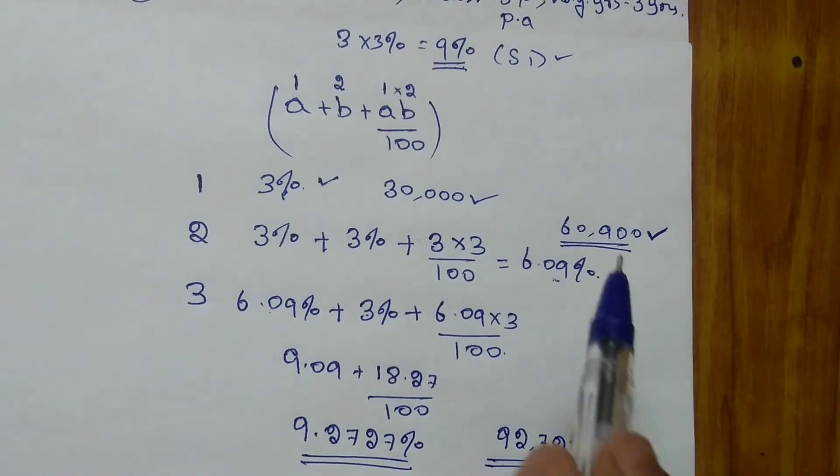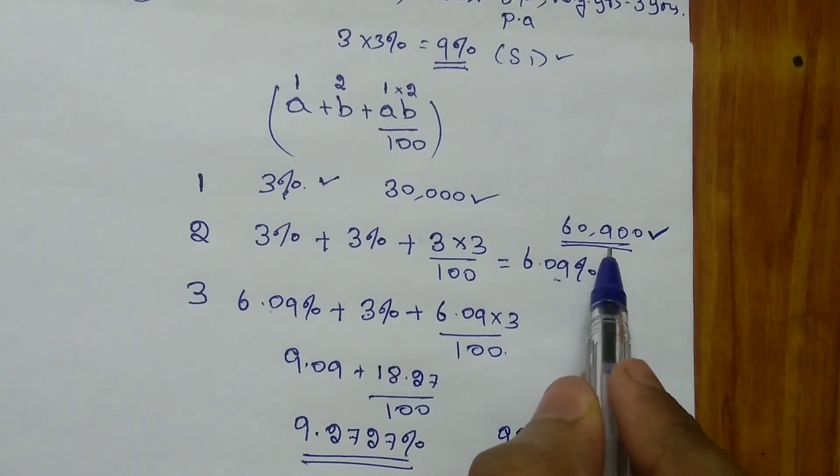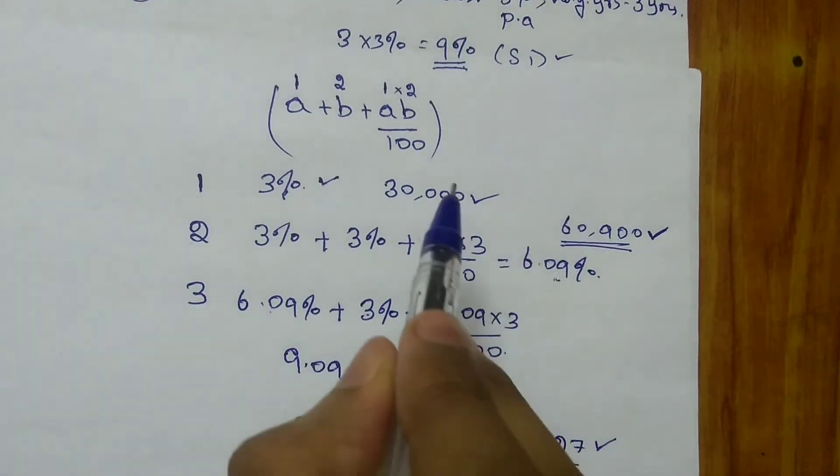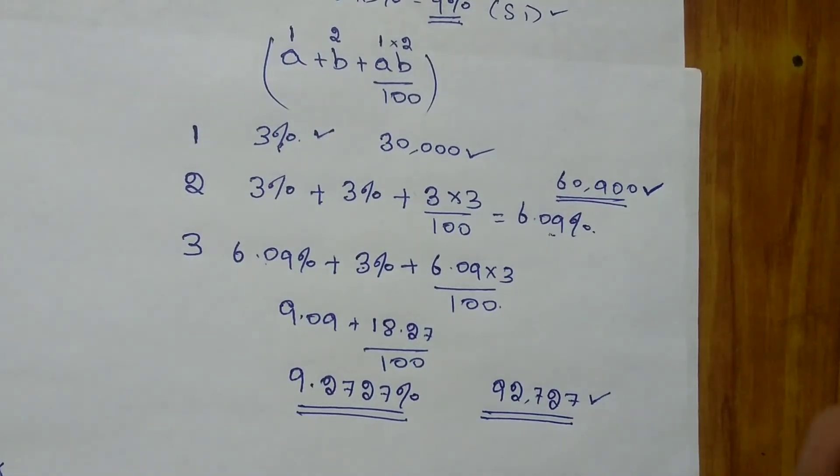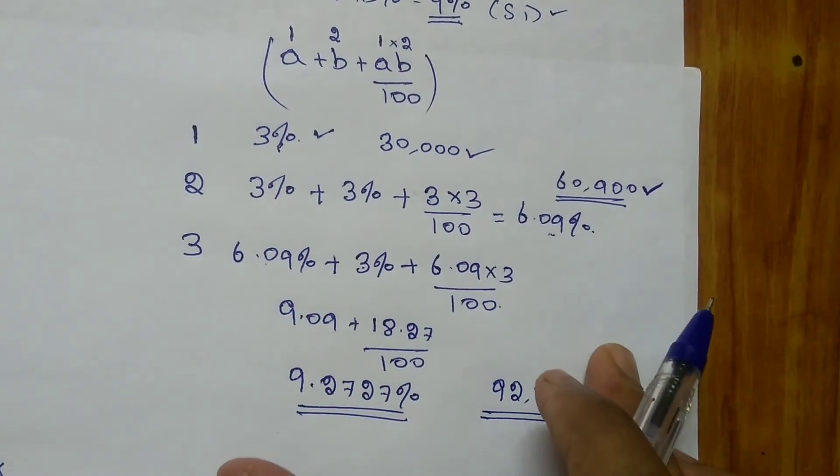At the end of second year, you have to totally pay 60,900. If you are not paying at the end of first year and second year, you have to totally pay 92,727 at the end of 3 years. I hope you understood how this interest calculation works in compound interest.